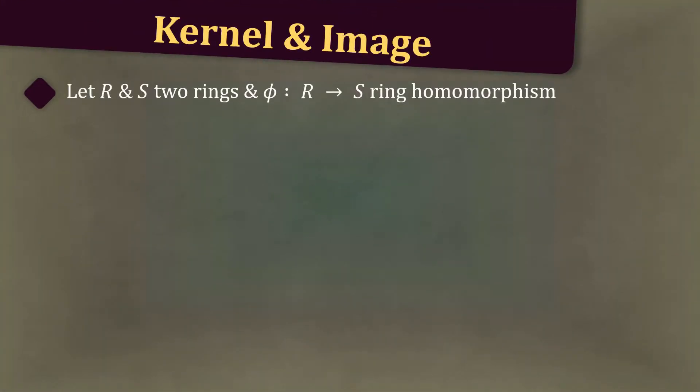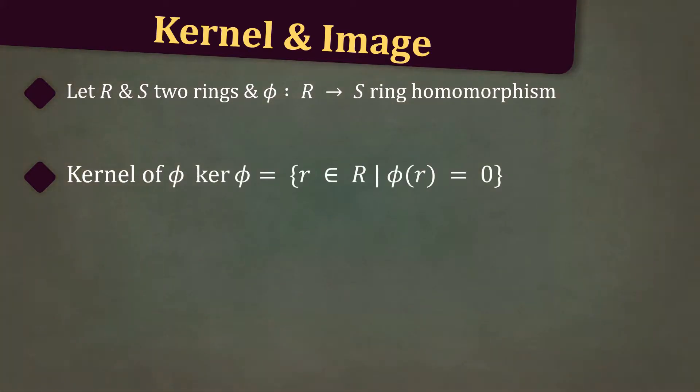Let R and S be two rings, and let phi from R to S be a ring homomorphism. Then, the kernel of phi is ker phi, which equals the set of all r in R such that phi of r equals zero. And the image of phi is im phi, which equals the set phi of r for all r in R.